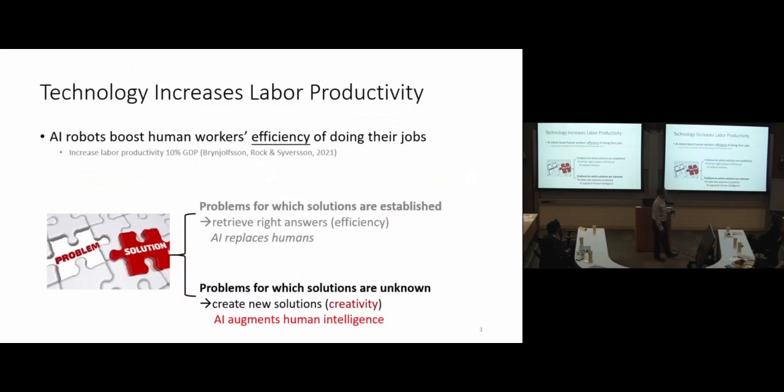Back to this paper, it's not surprising for everyone here that AI technology is going to increase labor productivity. The finding is exciting because it's equivalent to 10% of GDP when AI robots come to help us boost our teamwork efficiency. Now, most of our research focuses on problems for which the solutions are in order. The AI algorithm can detect the hidden pattern, the knowledge graph, and retrieve answers reliably, accurately, without much error, without fatigue.